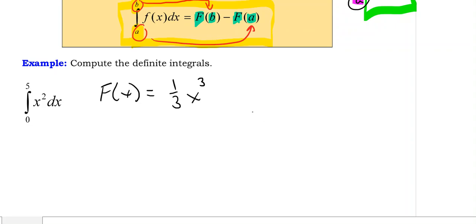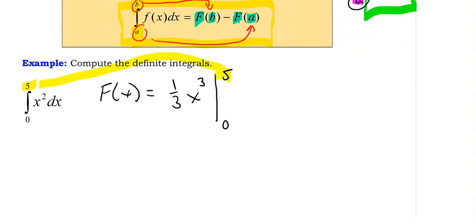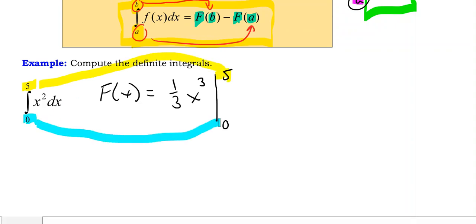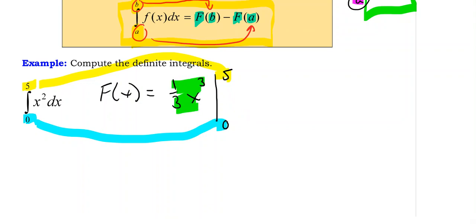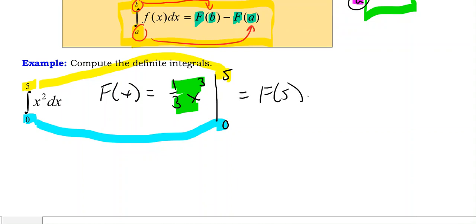With an indefinite integral we would put a plus c, but we do not want to do that now. Instead, we put a vertical line and place our lower and upper bounds of integration. The upper bound of integration goes here and the lower bound goes down here. This tells me I'm evaluating this antiderivative at five and at zero.